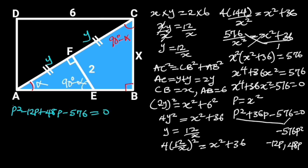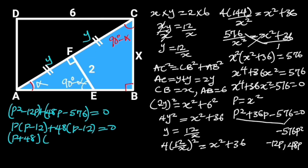Next, we factor out. From the first bracket, P will factor out to leave us with P minus 12. From the second bracket, 48 will factor out to leave us with P minus 12, which is equal to 0. Note that the two brackets must be the same. Hence, we can say that P plus 48 times P minus 12 is equal to 0.